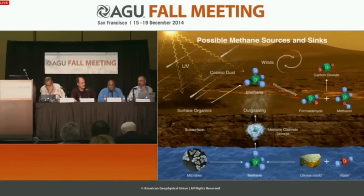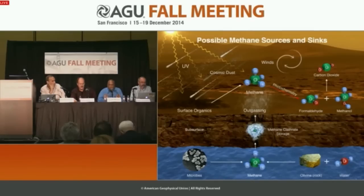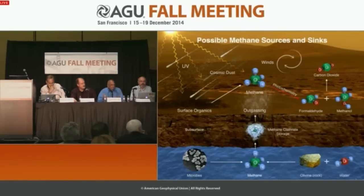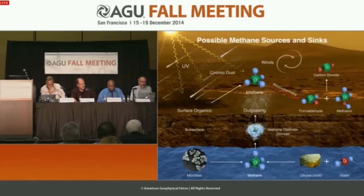In the atmosphere, photochemistry destroys methane. Solar UV photons are absorbed by methane and pull apart the methane molecule. Both methane and the products interact with chemicals in the Mars atmosphere. Methane and the products get oxidized and they form things like formaldehyde and methanol. Ultimately, they all go into carbon dioxide, which is added back to the background carbon dioxide atmosphere.